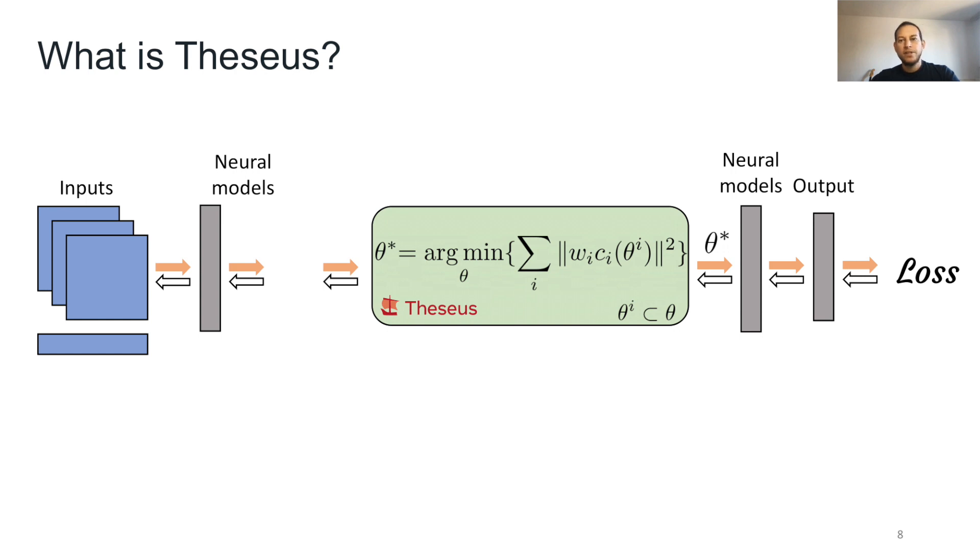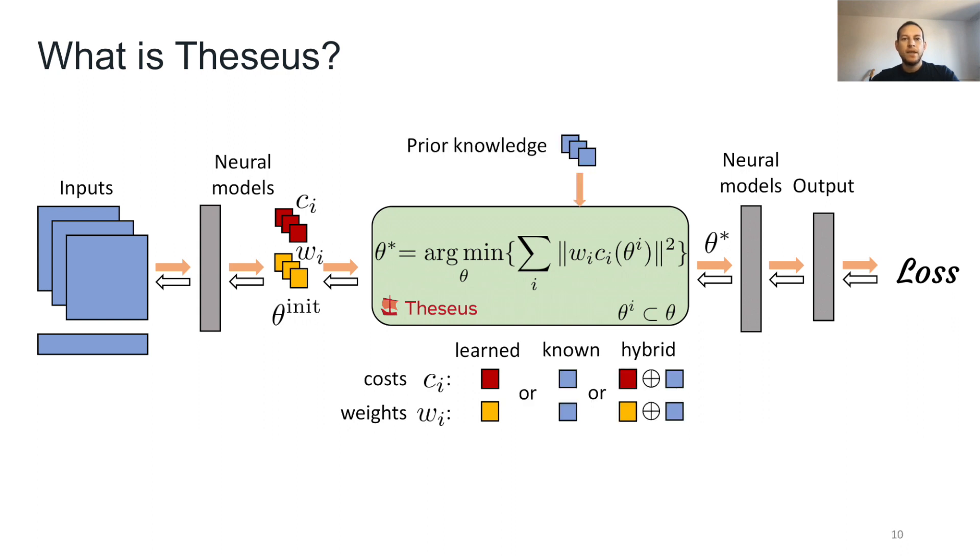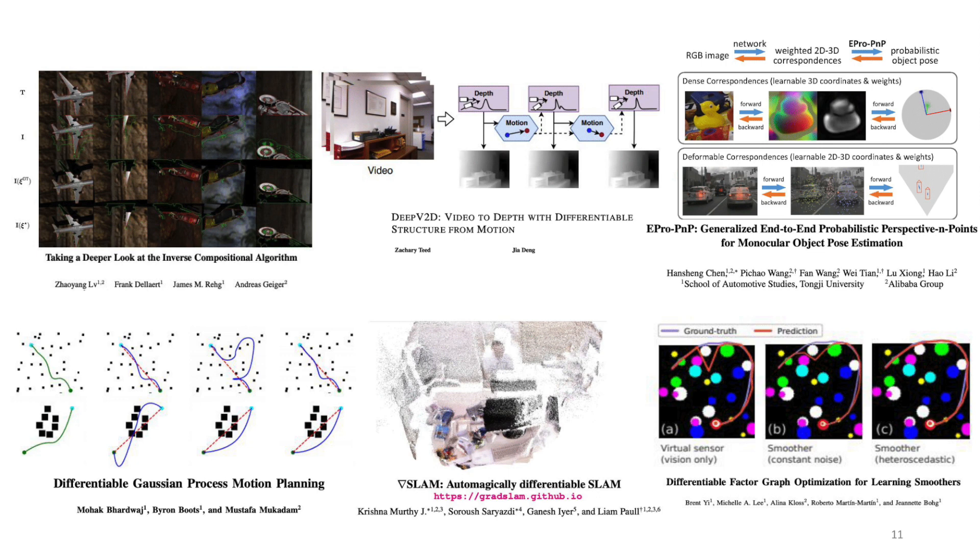In particular, differentiable nonlinear least squares provides a general scheme to encode such inductive priors, where the objective function can be partially parameterized by neural models and partly with engineering domain-specific differentiable models. The ability to compute gradients end-to-end is retained by differentiating through the optimizer, which allows neural models to train on the final task loss while also taking advantage of priors captured by the optimizer.